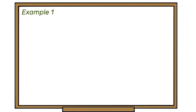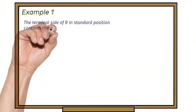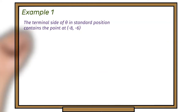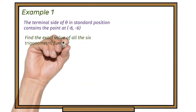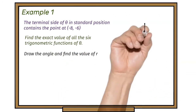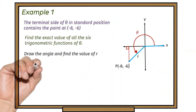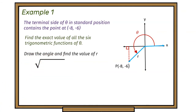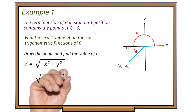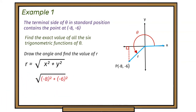Example 1: The terminal side of theta in standard position contains the point at (−8, −6). Find the exact value of all six trigonometric functions of theta. Draw the angle and find the value of r. We label our axes, find our triangle, and put the values into the Pythagoras formula. So x is −8 and y is −6, and we'll use this to find r, which is the hypotenuse.